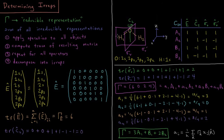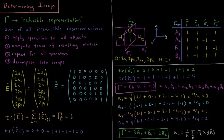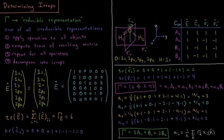For sigma V prime: 1s1 is in the plane, stays the same, that's 1. 1s2 is in the plane, stays the same, that's 1. 2s is in the plane, that's 1. 2pz is in the plane, that's 1. 2py is in the plane, that's 1. And 2px is perpendicular to the plane, switches positive and negative lobes, becoming the negative of itself, that's minus 1. Those all add up to 4. So our total reducible representation is (6, 0, 2, 4): character 6 under E, 0 under C2, 2 under sigma V, and 4 under sigma V prime.